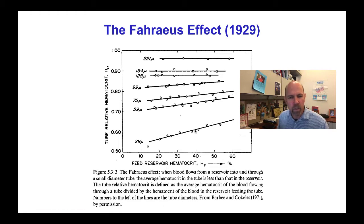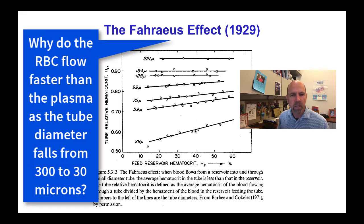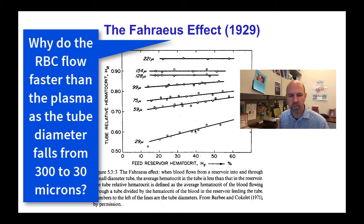So then the question is, why does that happen? Why, as tube diameter decreases from 200 or 300 microns down to 30 microns, does the red blood cell average velocity get faster than the plasma average velocity?